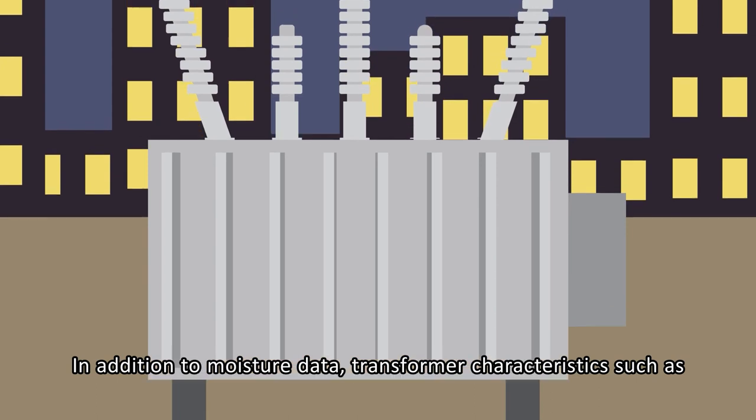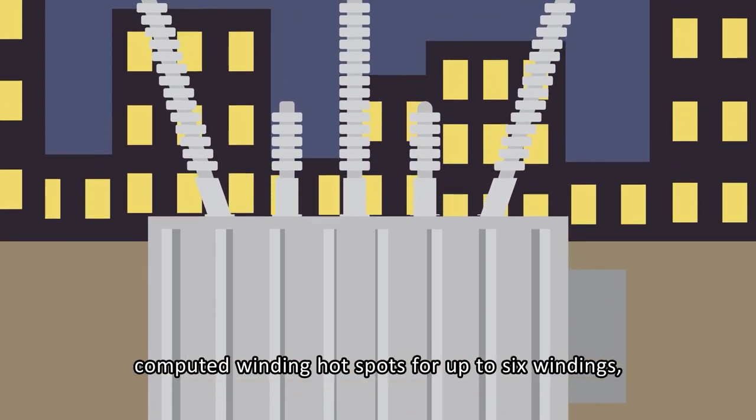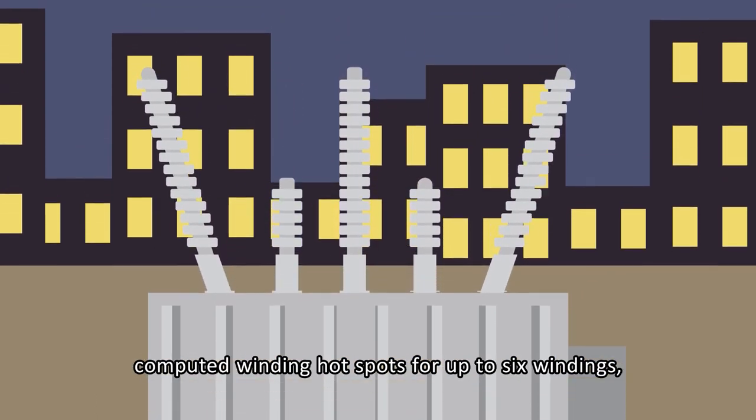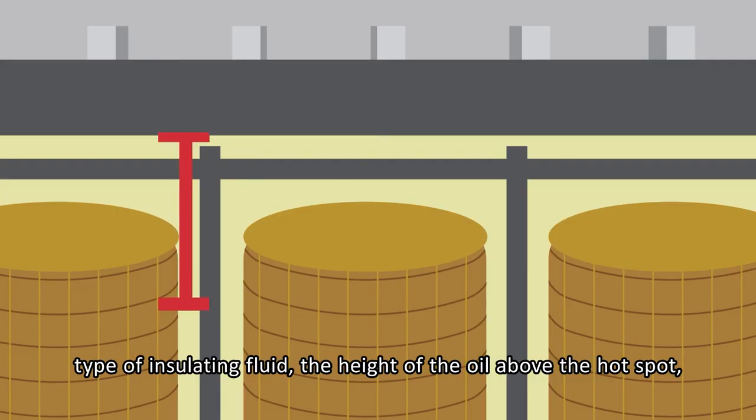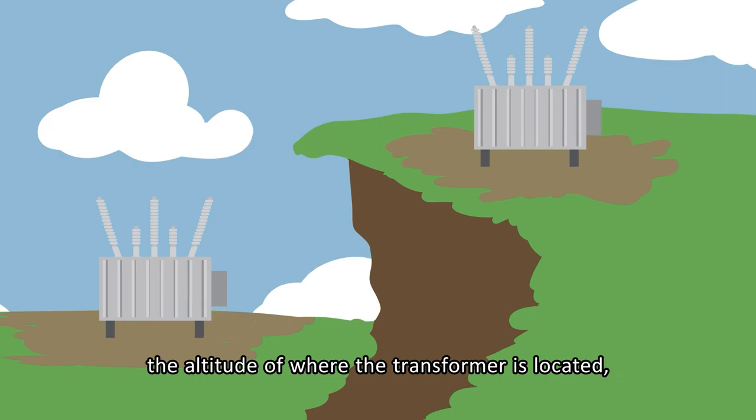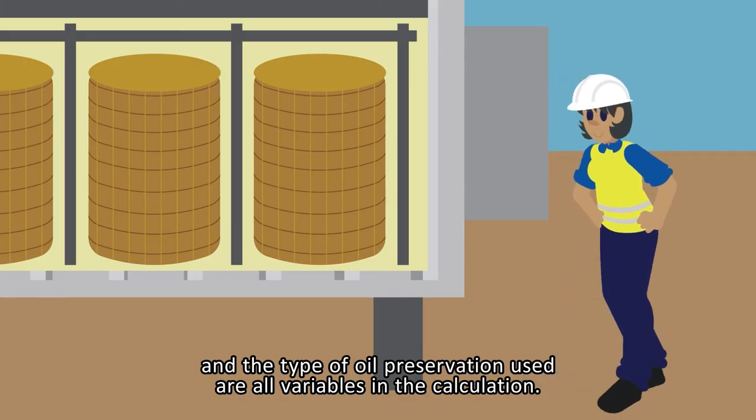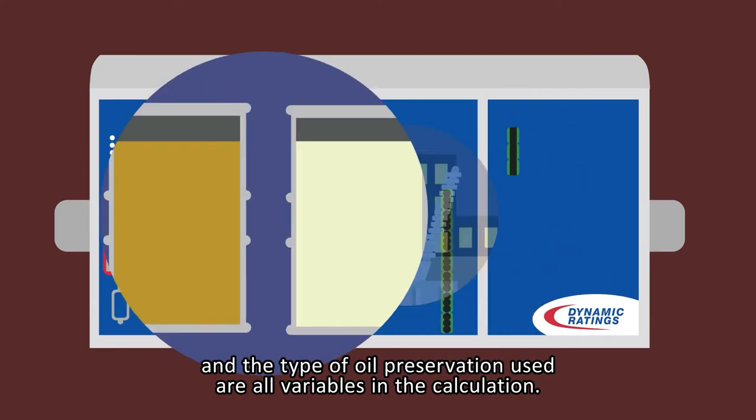In addition to moisture data, transformer characteristics such as computed winding hotspots for up to six windings, type of insulating fluid, the height of the oil above the hotspot, the altitude of where the transformer is located, and the type of oil preservation used are all variables in the calculation.